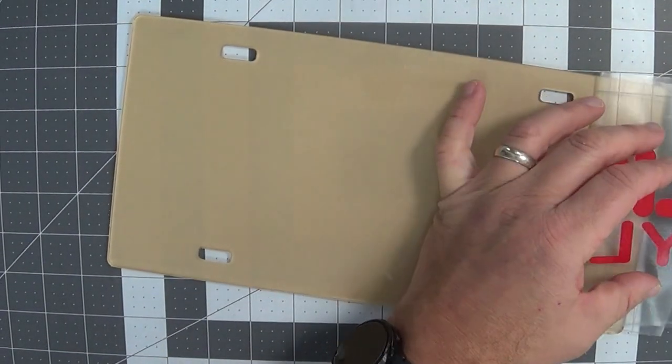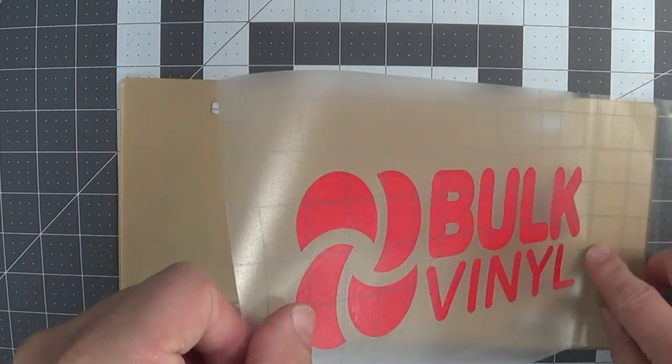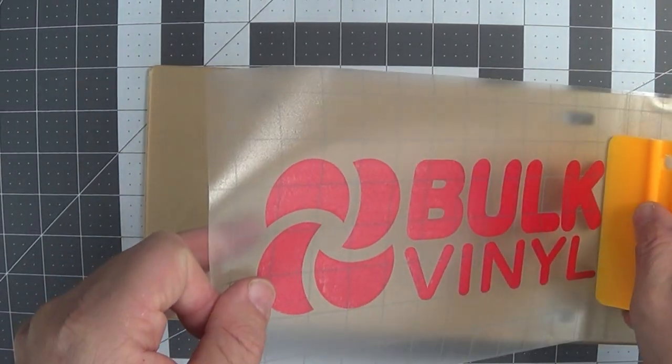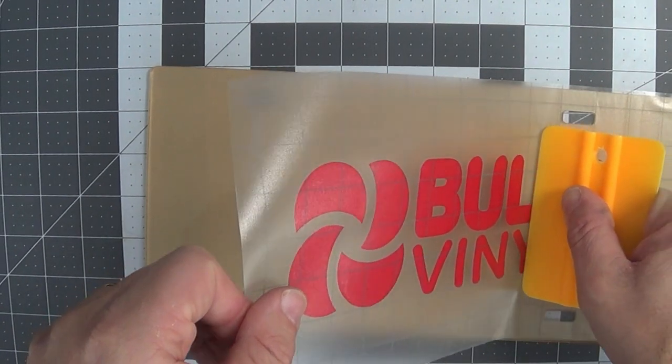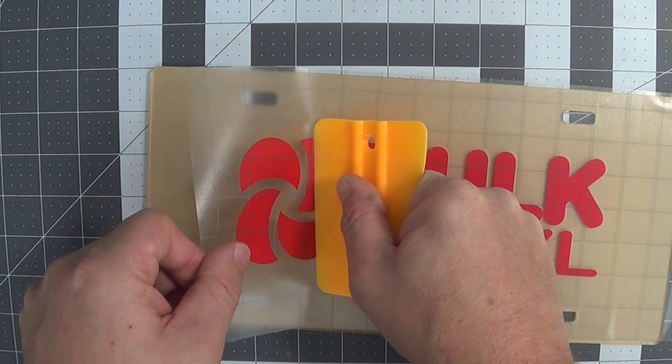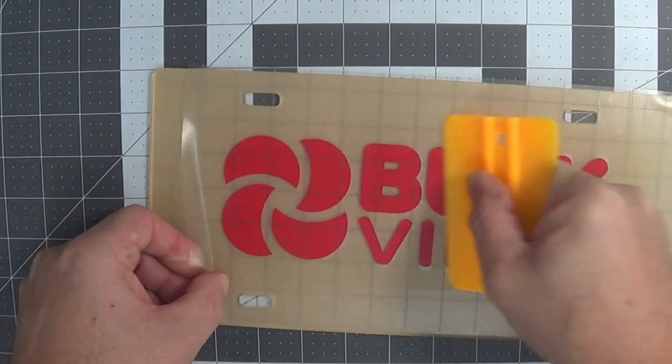But in this case I'm going to go ahead and just remove that and I've got it tacked down into place with the transfer tape. And so while I hold the decal up, I'm going to use my squeegee to apply gradually directly across, laying it down gently while I go and swiping with firm strokes.